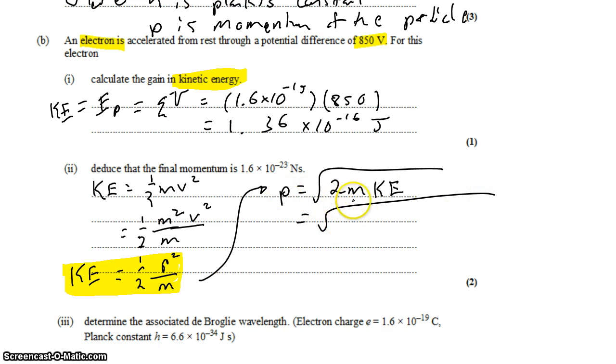Momentum is what we're looking for, and we know mass and kinetic energy. The mass of an electron is 9.11 times 10 to the negative 31 kilograms. The kinetic energy we found in part one is 1.36 times 10 to the negative 16. Punch that into your calculator, and you get 1.57 times 10 to the negative 23 newton seconds.